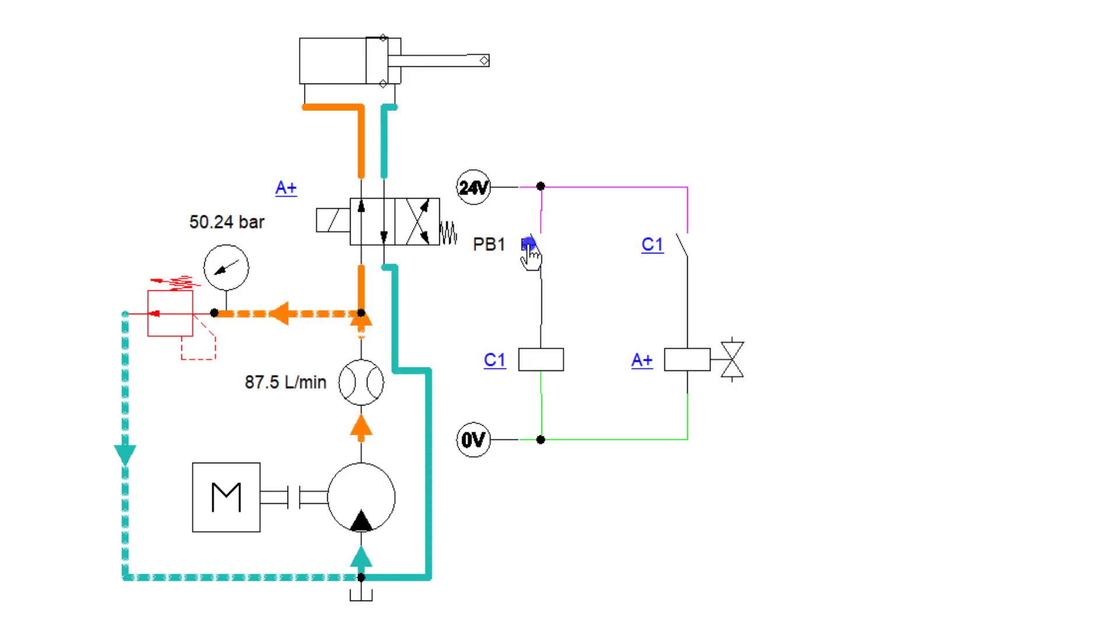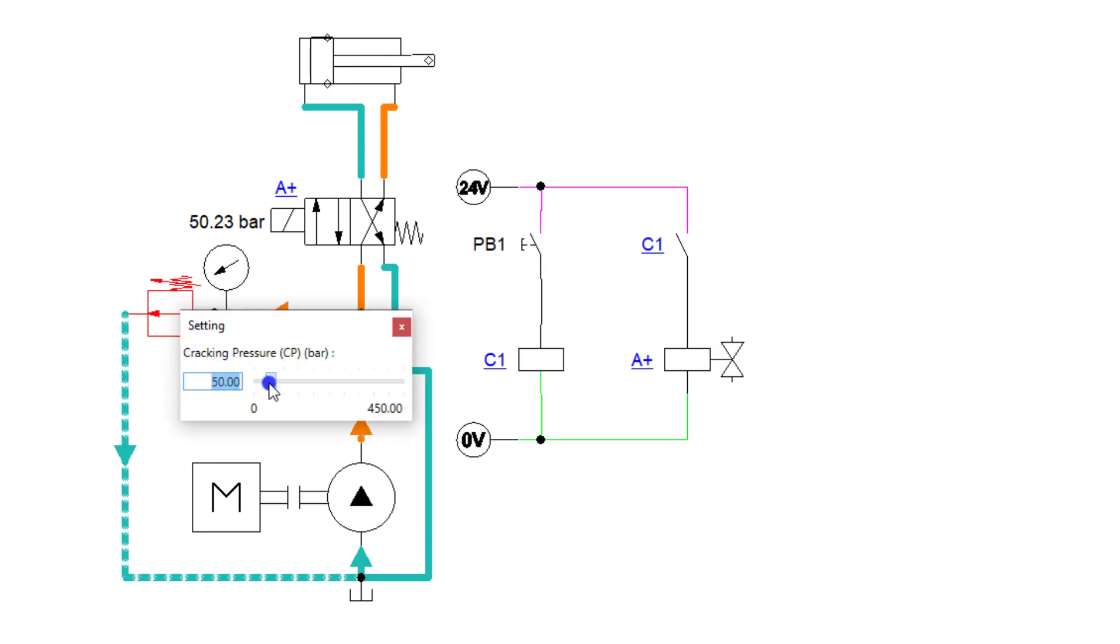So that should slow the index down of this actual cylinder going and indexing out. We can actually speed that up and slow that down based upon how much pressure we want to use. And this pressure relief valve will do that.